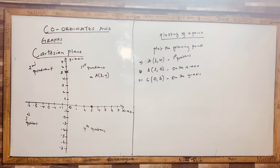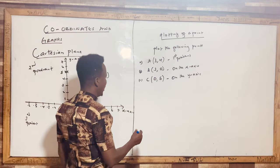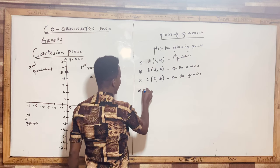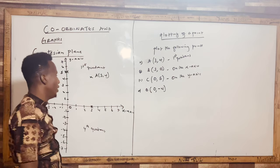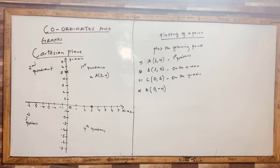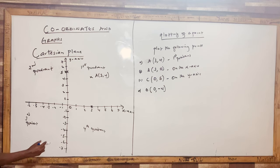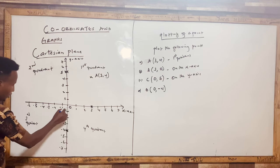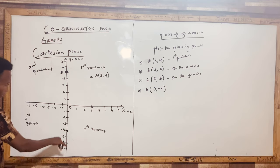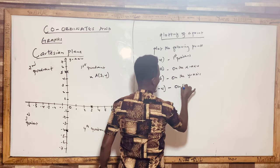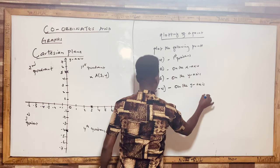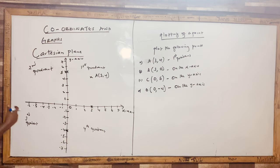Point D is (0, -4). x is 0, so no horizontal movement. y is negative 4, so I go down to negative 4. This point also falls on the y-axis.